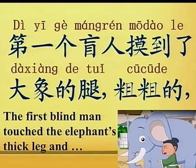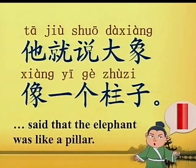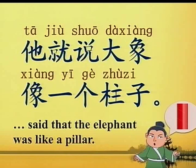他们都说不知道。 They used their hands to touch the elephant. 第一个盲人摸到了大象的腿，粗粗的。 The first blind man touched the elephant's thick leg and 她就说大象像一个柱子。 said that the elephant was like a pillar.